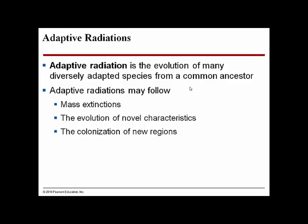Adaptive radiation is the evolution of many diversely adapted species from a common ancestor — like the Galapagos finch that found its way to the archipelago and evolved into different ecological niches and different species. Adaptive radiations may follow mass extinctions, the evolution of a novel characteristic, or colonization of new regions. For example, angiosperms evolved the flowering plant — a very successful novel characteristic — and as new insect species evolved to adapt to the flowering plant, that process of co-evolution allowed for adaptive radiation of the angiosperms.